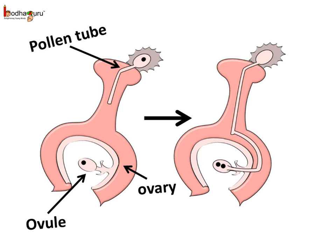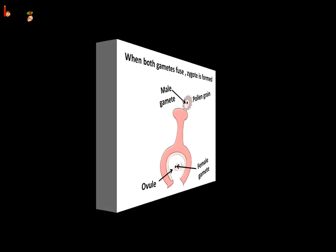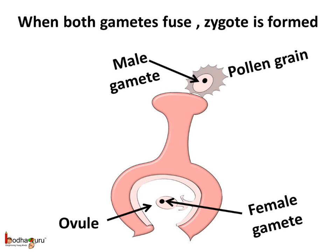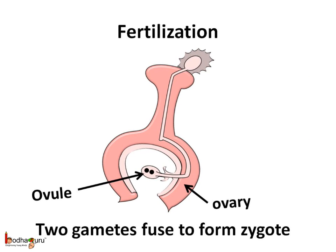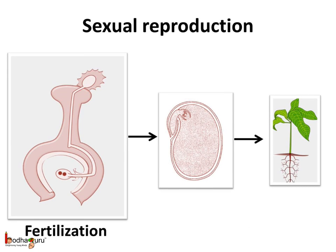Then the male gamete and the female gamete fuse together to form the zygote. So when two different types of gamete cells fuse, the zygote is formed, and this zygote grows into an embryo. As the pollen grain comes from the male part of the flower, it consists of the male gamete, and the ovule consists of the female gamete. This process of fusion of male gamete and female gamete to form a zygote is called fertilization. Then the zygote develops into an embryo, and then the embryo into the baby plant. This type of plant reproduction process is called sexual reproduction, where the gametes participate and the zygote is formed after the fusion of male and female gametes.